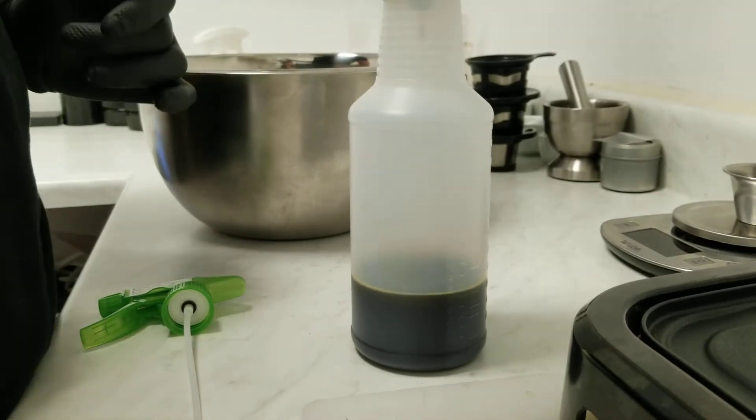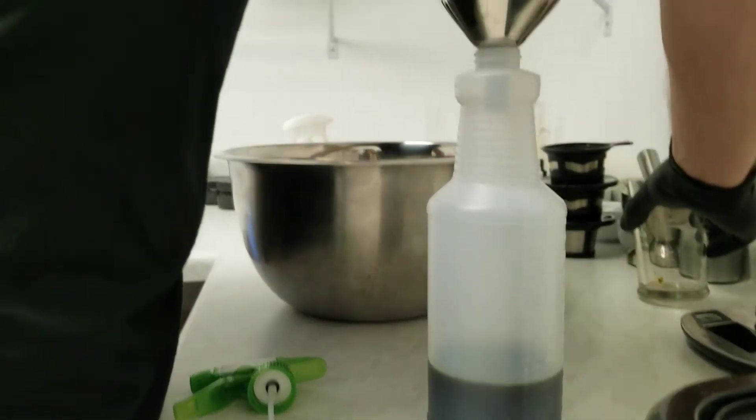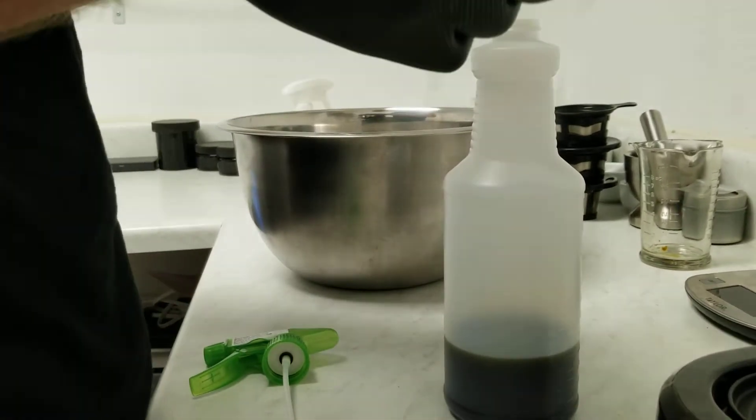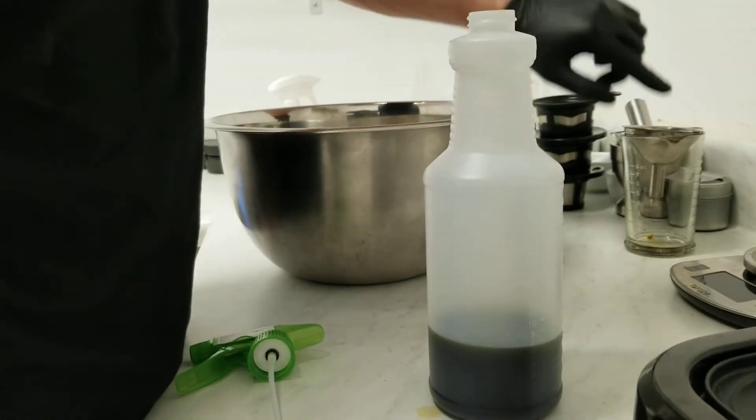So yes, this is 200 milliliters or about eight fluid ounces. You want to use as little alcohol as possible so you don't have to get your sugar so wet. It's very important.